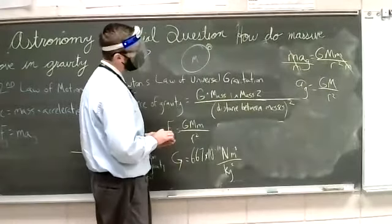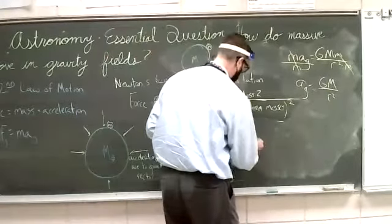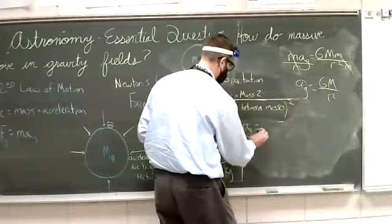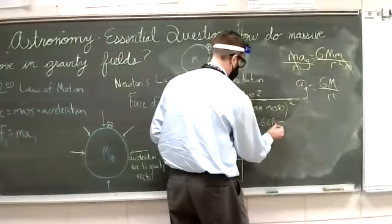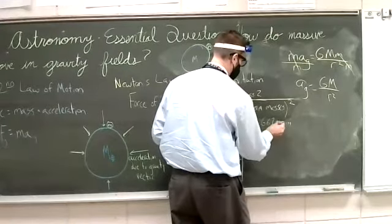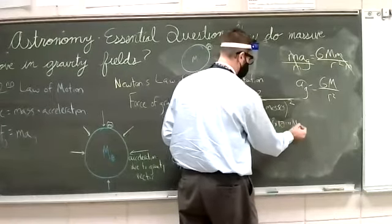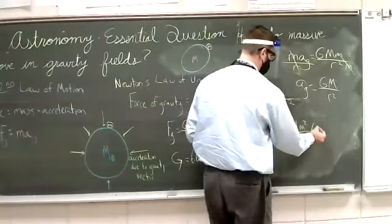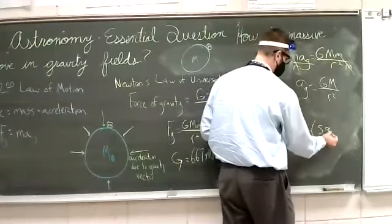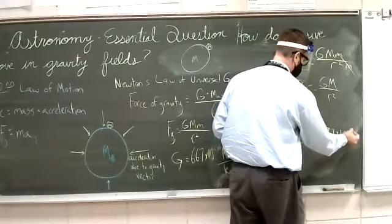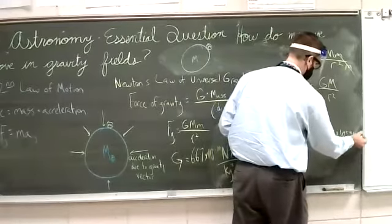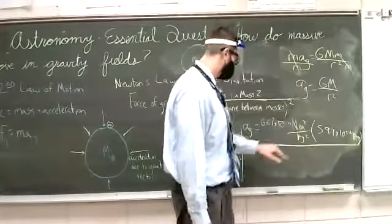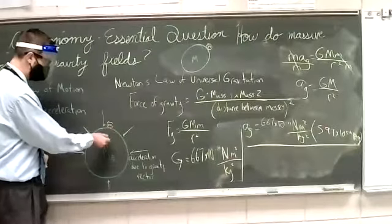So the acceleration due to gravity is equal to 6.67 times 10 to the negative 11, the units are newton meters squared per kilogram squared. The mass of the Earth, everybody knows, is 5.97 times 10 to the 24 kilograms, divided by the separation distance squared. So how far away from the Earth are you?